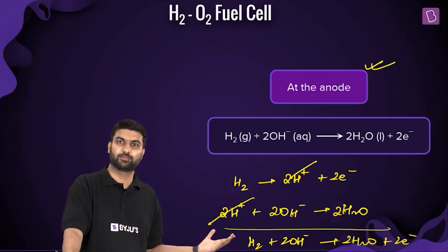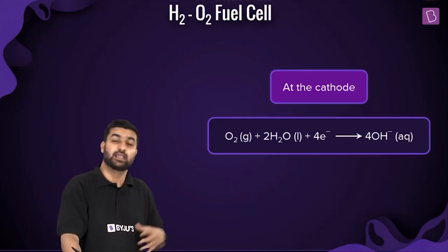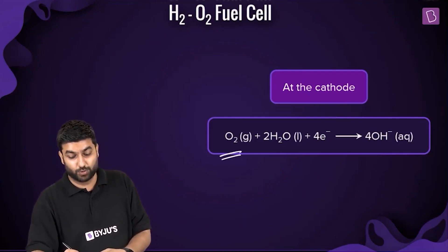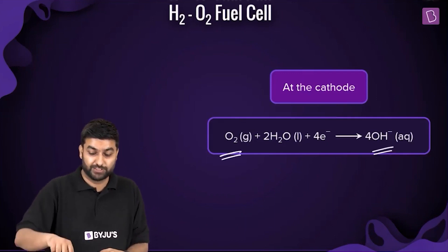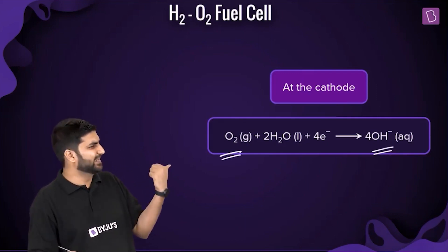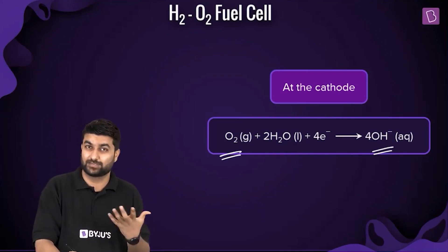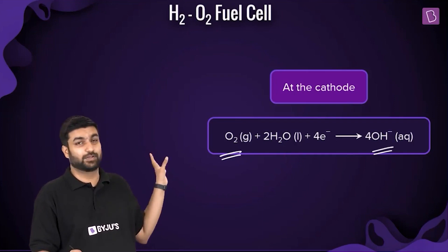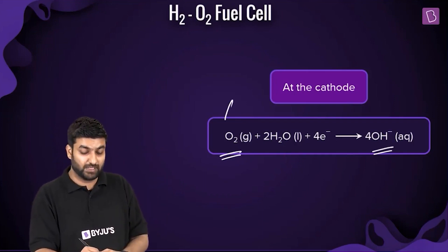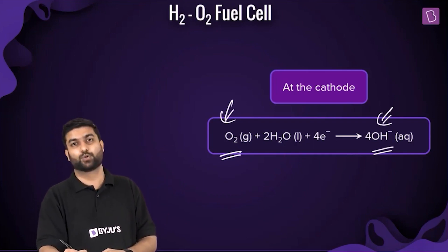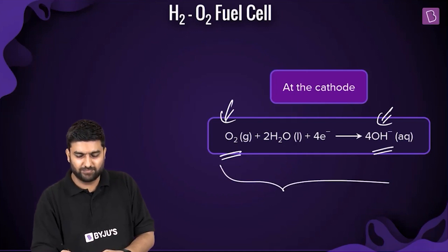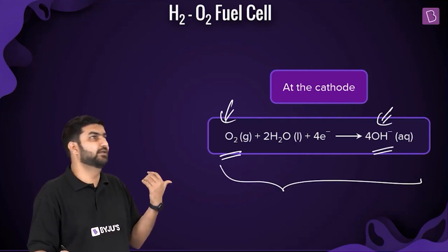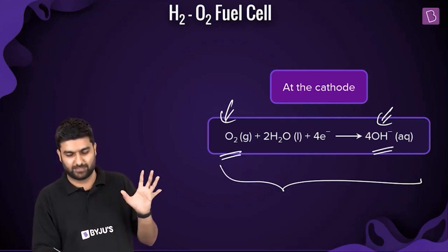At the cathode, O2 gets converted into OH⁻. You can balance this equation yourself using the redox balancing method from the redox reactions chapter. The key point is that O2 is reduced to OH⁻; the rest of the balanced equation follows from that.